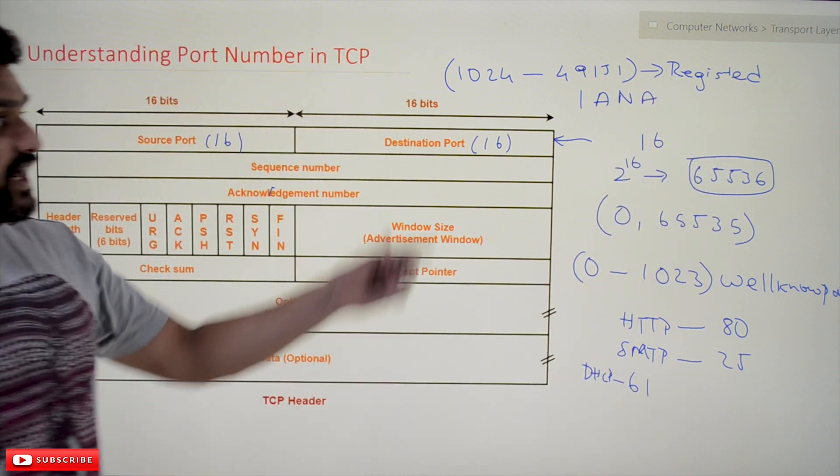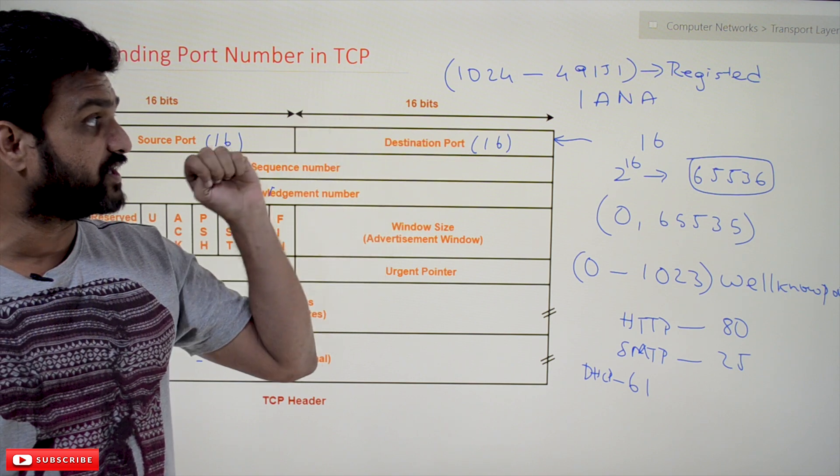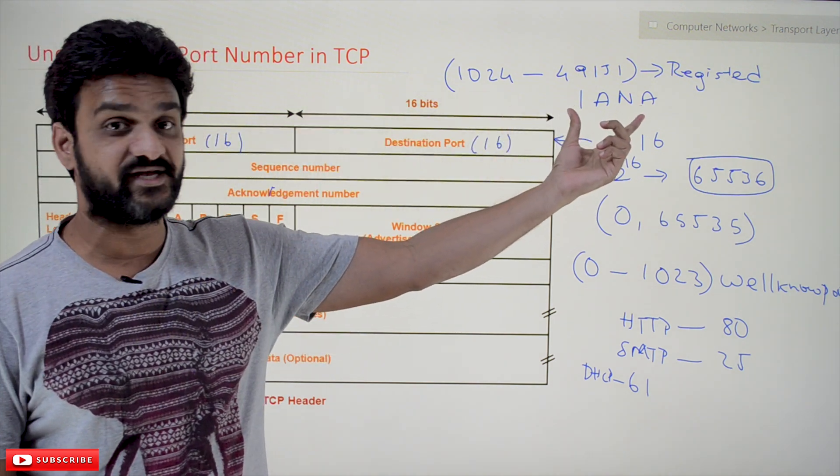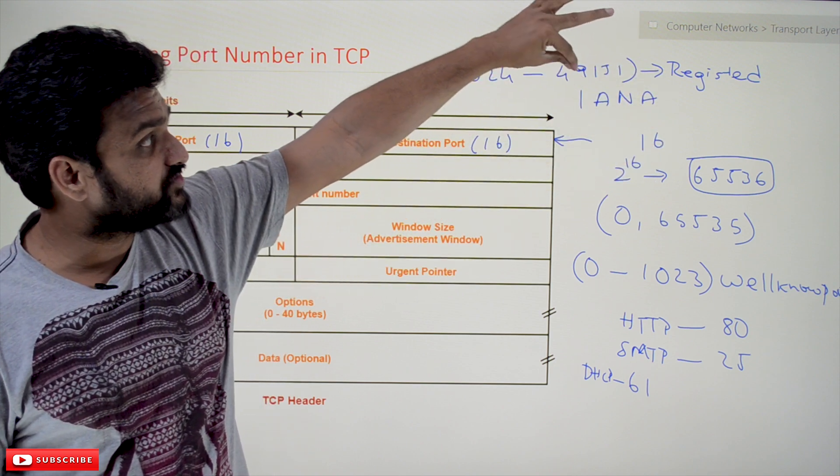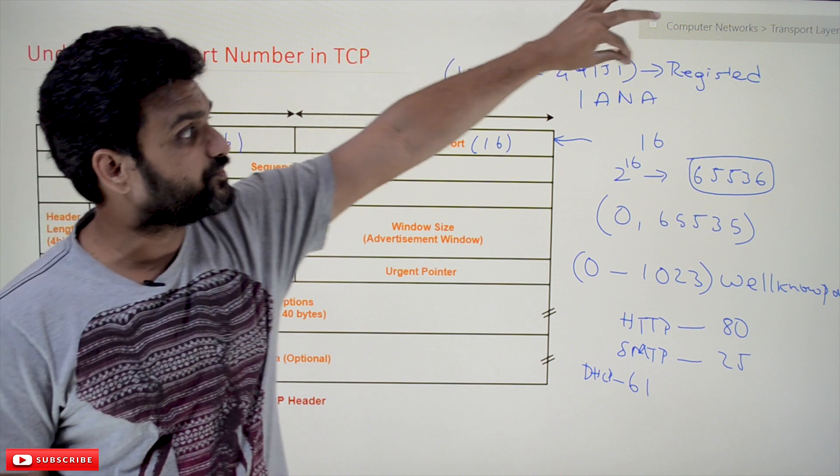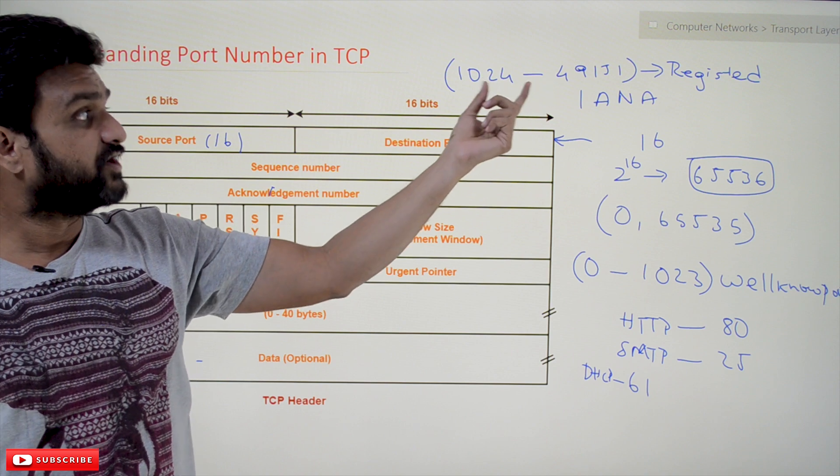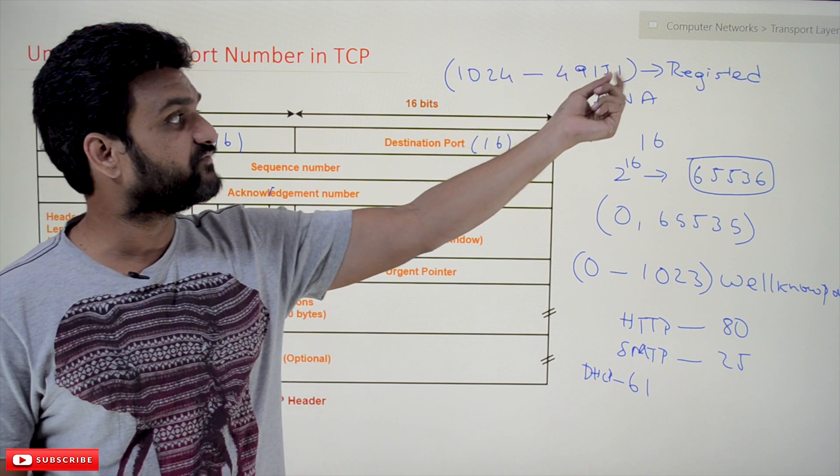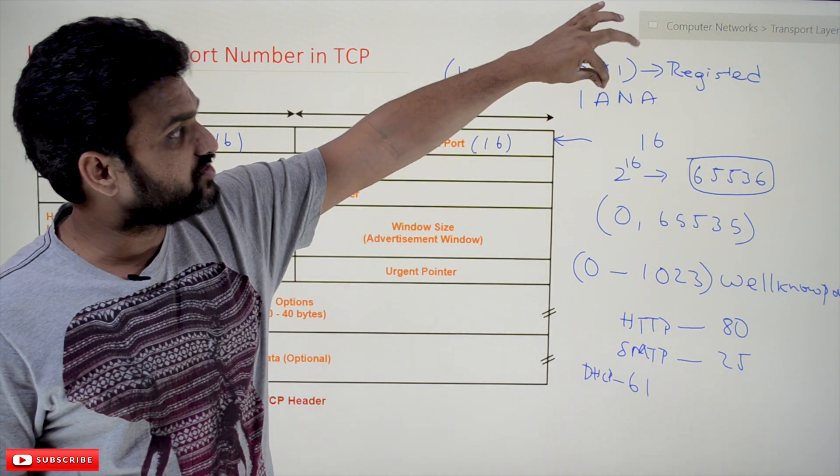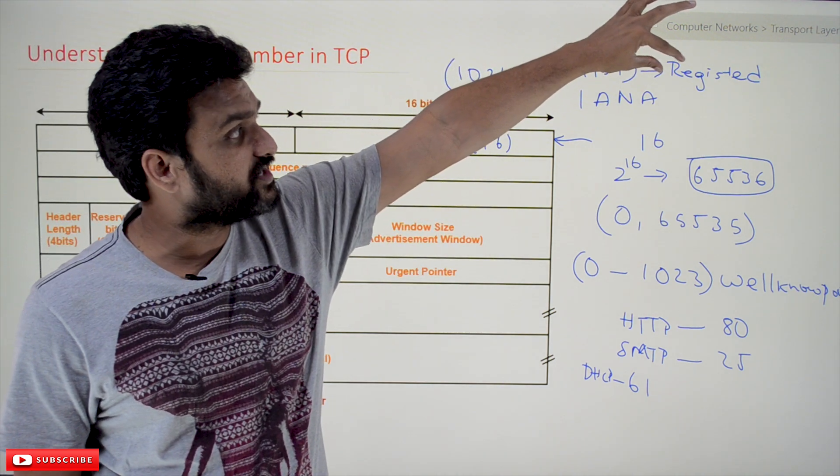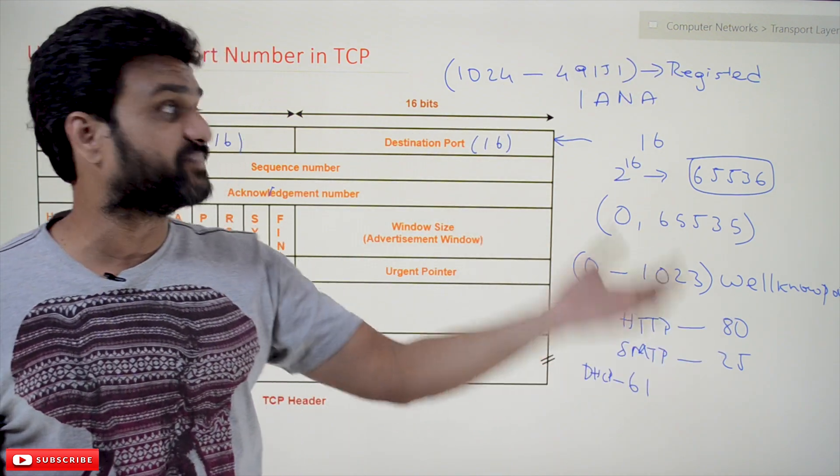IANA is the International Assigned Number Authority. This is the body which is going to take control of these registered port numbers. These registered port numbers are under the control of IANA, from 1024 to 49151. So if you want to register some specific port number, then you can get the numbers from this range.